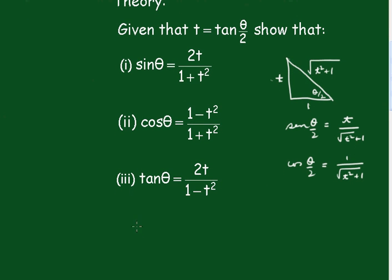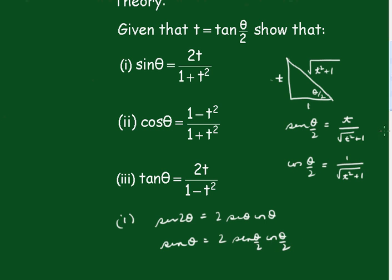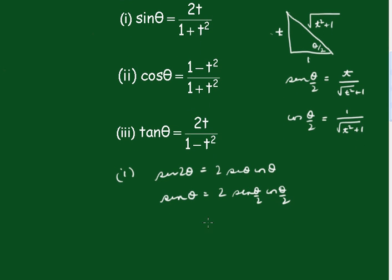Now the first derivation: we know that sin 2θ equals 2 sin θ cos θ, therefore sin θ equals 2 sin(θ/2) cos(θ/2). Replacing sin(θ/2) with t over √(1+t²) and cos(θ/2) with 1 over √(1+t²), we get 2t over (1 plus t squared).